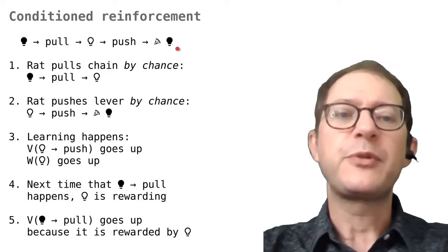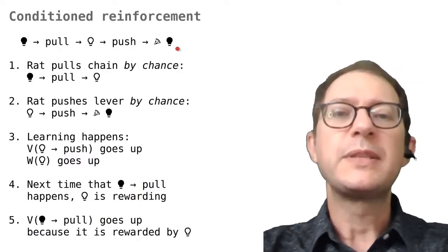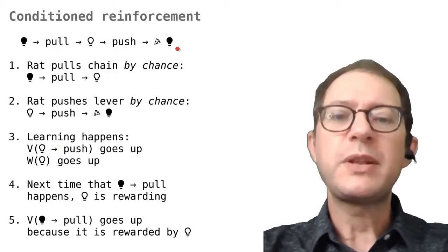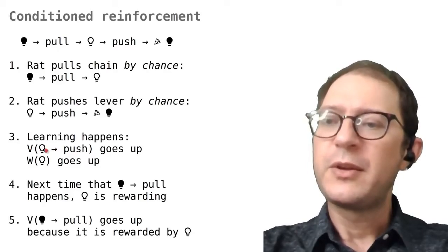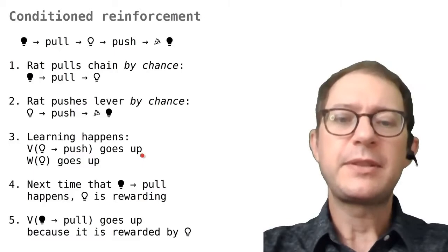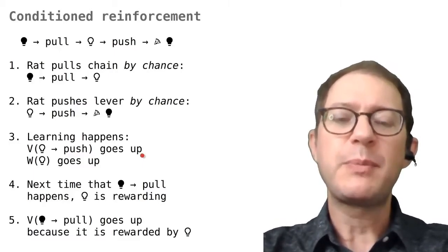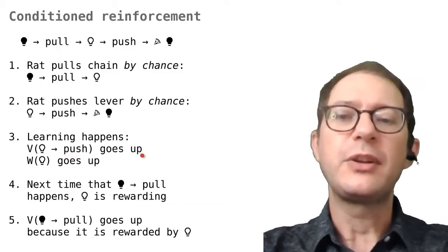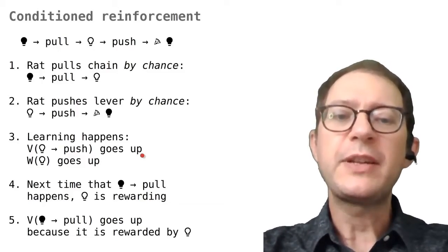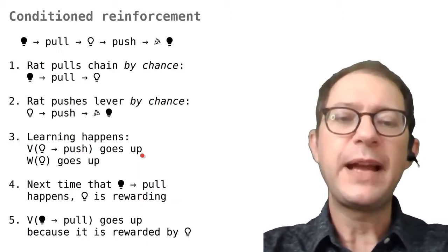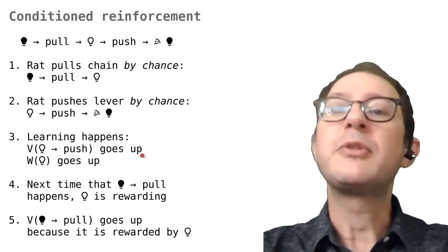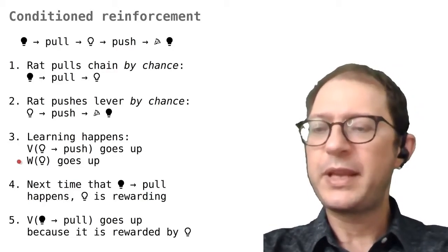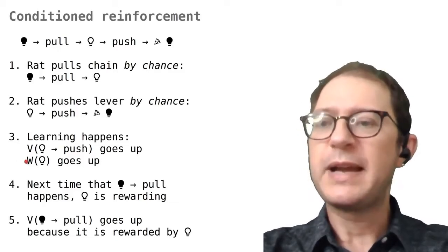First, the associative strength for pushing when the light is on goes up, because this action has just been rewarded — this is what we saw in our lesson on learning actions, shown as step three here. The second thing that happens — and that will eventually solve the problem for the rat — is that the value of the light on also goes up, because the light on has just been followed by food. From what we know about conditioned reinforcement and learning stimulus values, the rat will start to find the light on rewarding.